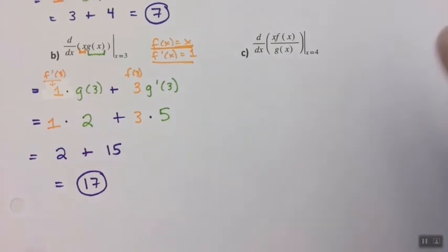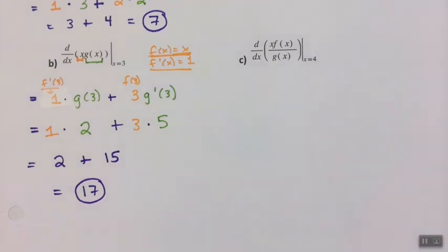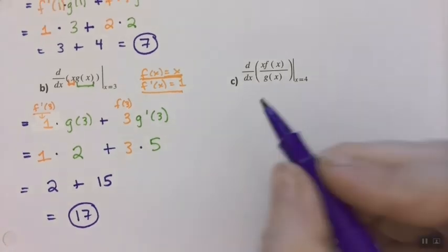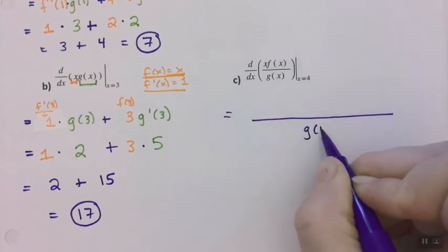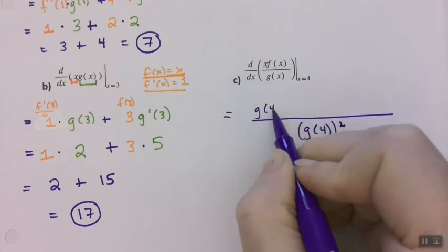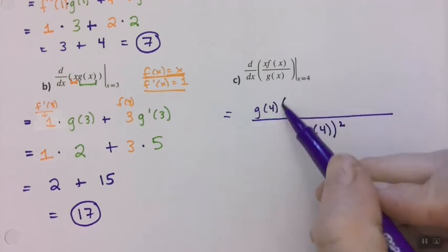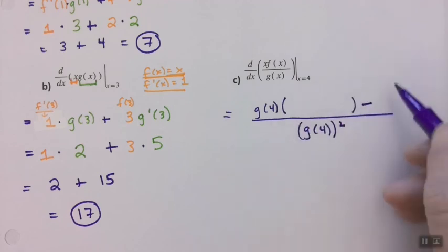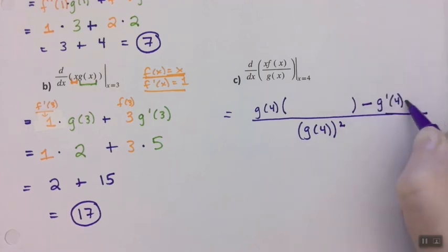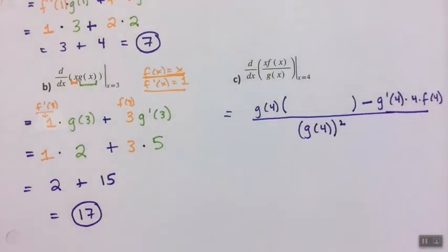Last but not least, this is going to require both the product rule and quotient rule — just to make our lives more fun. The derivative is going to be set up with g of 4 squared in the denominator, and g of 4 goes up here in front. So I'm actually doing the quotient rule and the substitution all at the same time. Over here, I'm going to need the derivative of my numerator. Minus g prime of 4 times 4 times f of 4.